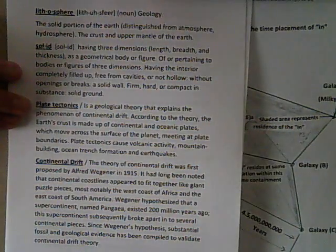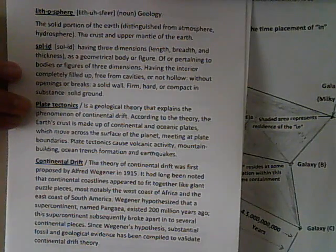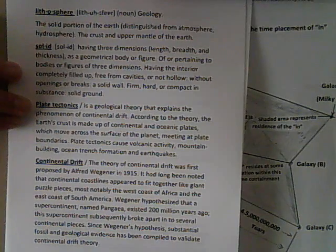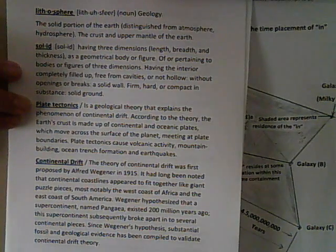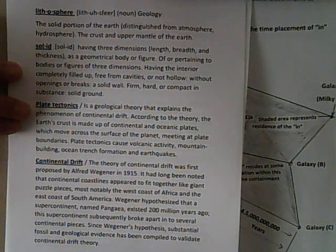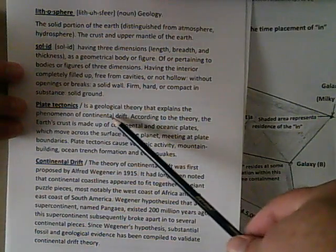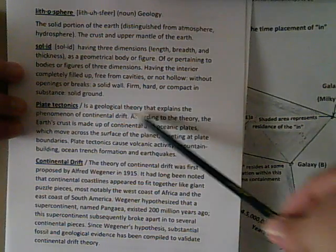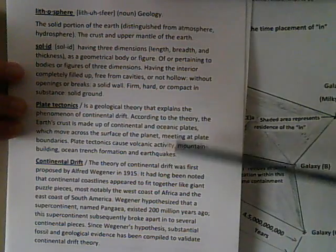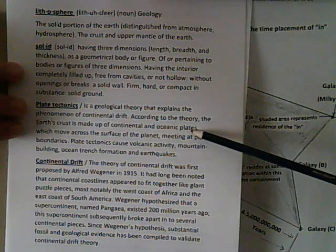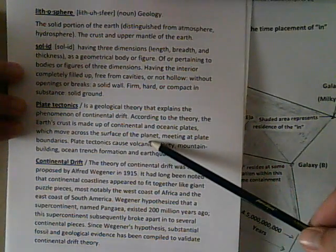Plate tectonics — now here we go with this term. Plate tectonics is a relatively new science historically. The theories of plate tectonics began in the 1940s and have been developed hand-in-hand with the mapping technologies, with volcanology being the major science that looks at plate tectonics. Plate tectonics is a geological theory that explains the phenomenon of continental drift. According to the theory, the Earth's crust is made up of continental and oceanic plates which move across the surface of the planet.